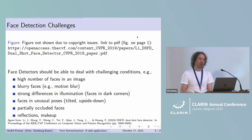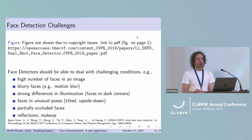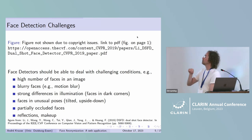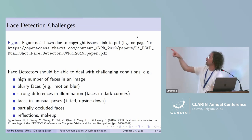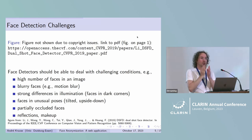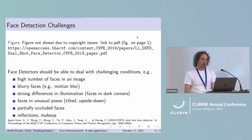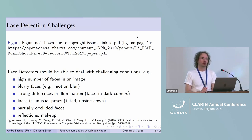Further, we might have faces in unusual poses, like with strongly tilted heads, or even upside-down faces. We might also have partially occluded faces — some faces covered by hands — that are still showing some parts of the face, so they should definitely be detected and anonymized. We can also have reflections and strong makeup that might disturb face detectors.